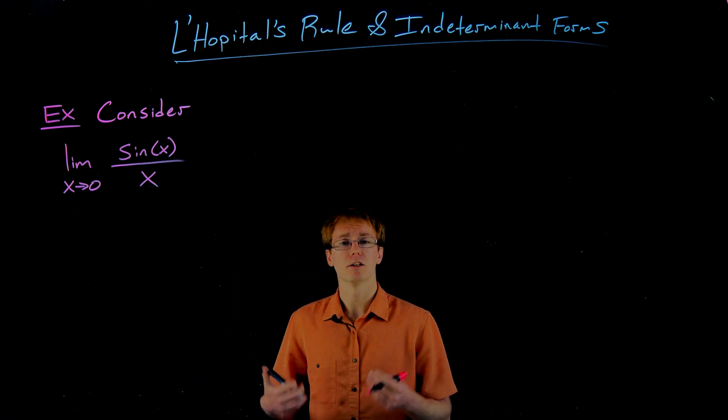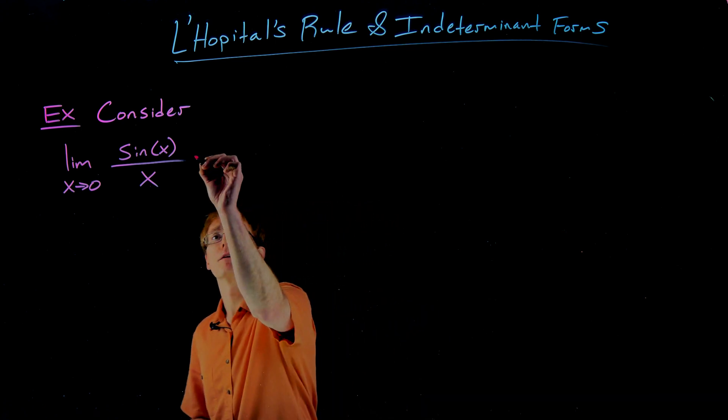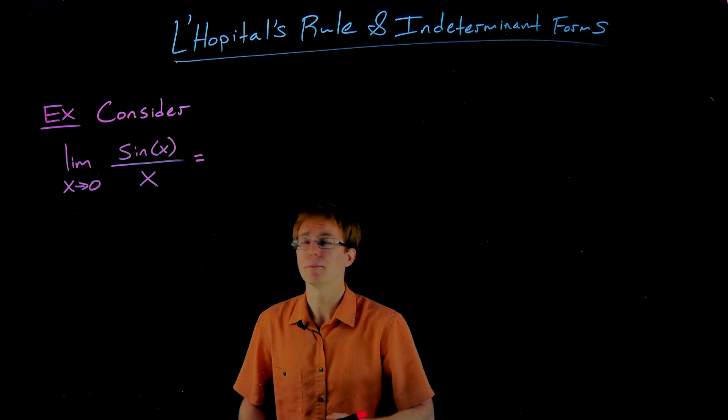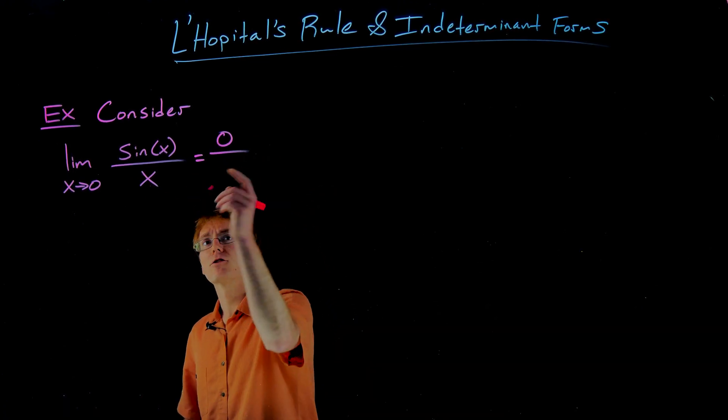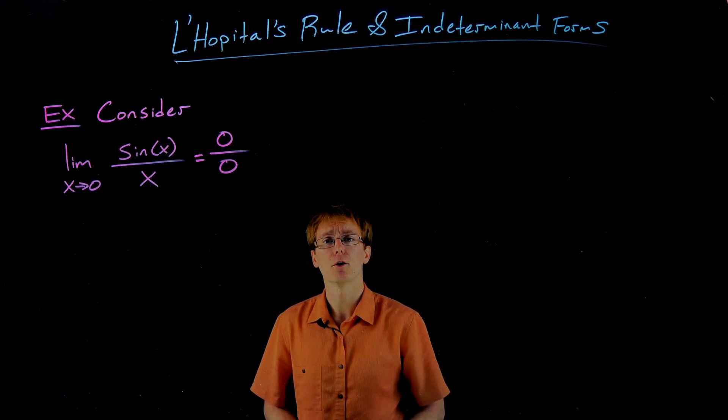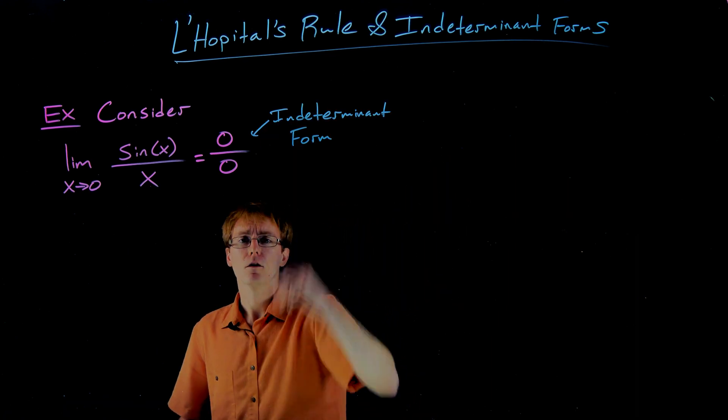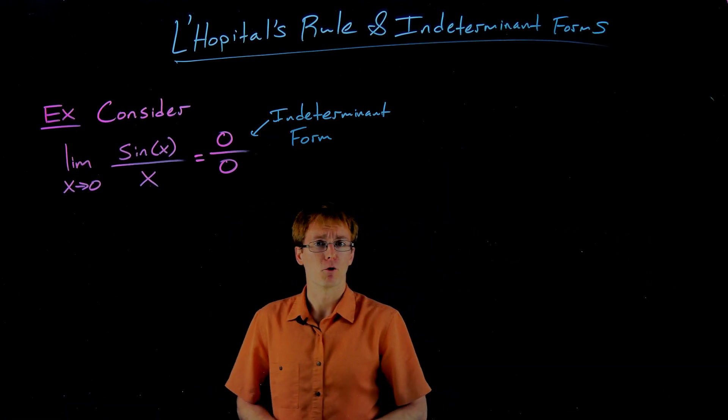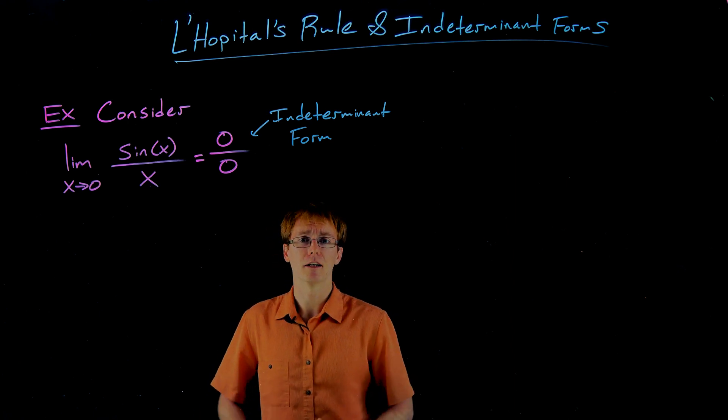So if we try to evaluate this limit using direct substitution, just plug in our x value of interest, that's what we should always do when trying to work with a limit. Well we get sine of zero, which is zero, divided by x, which goes to zero, and so we end up with this quotient of zero over zero. This is an example of what we call an indeterminate form. We refer to this as an indeterminate form, and there's gonna be some other indeterminate forms that we will run into that we'll see later.